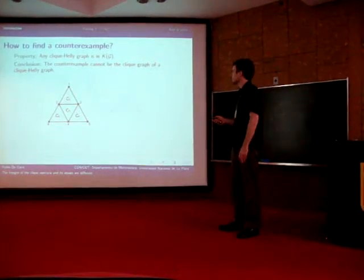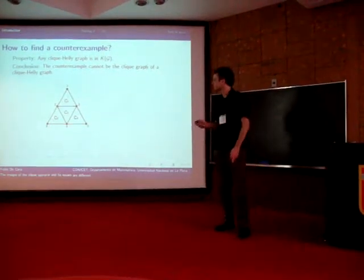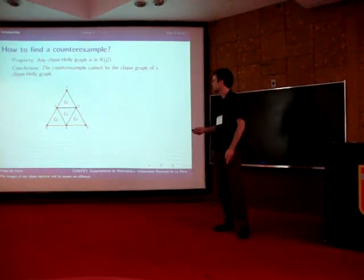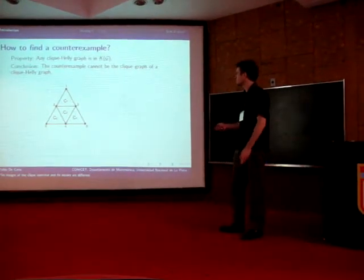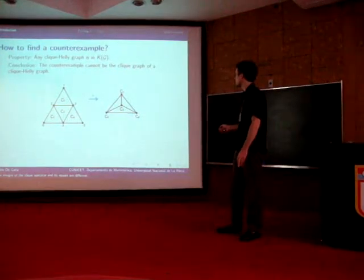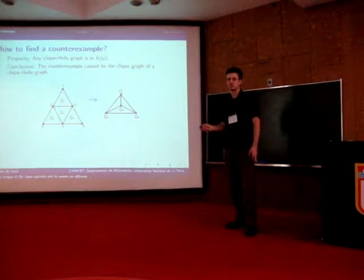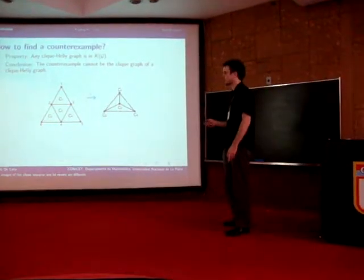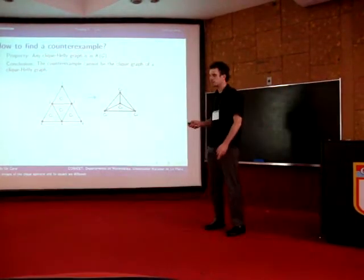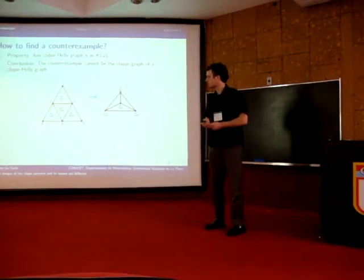One of the classical examples of a graph that is not K-Helly is the threesome. But unfortunately, when one calculates the clique graph of this graph, we get K4 and it doesn't provide a counterexample of a graph in K of G minus K squared of G.